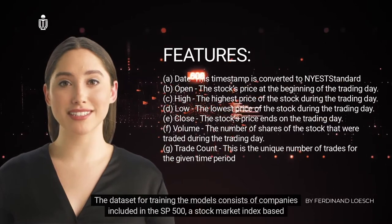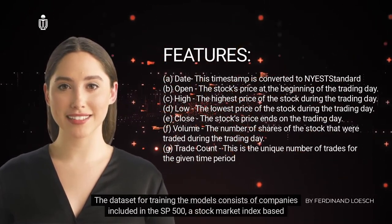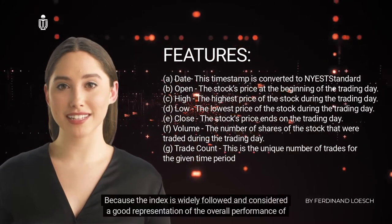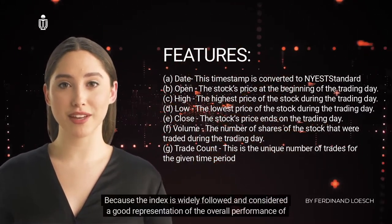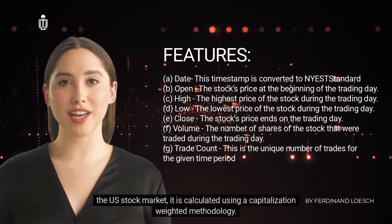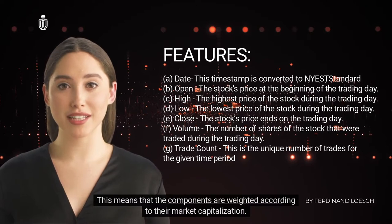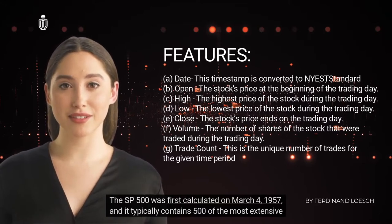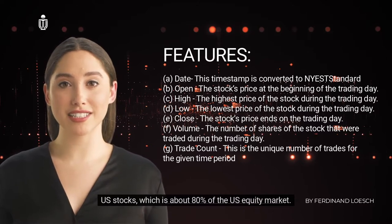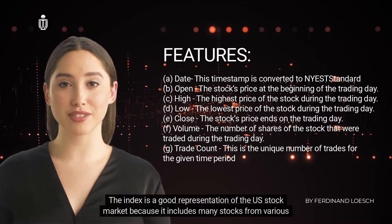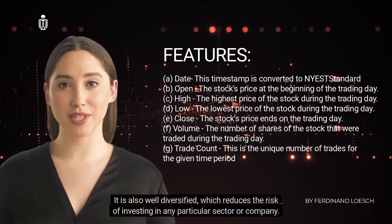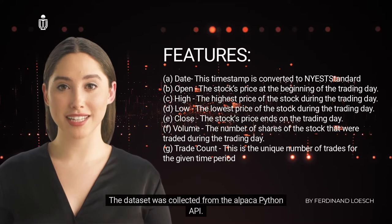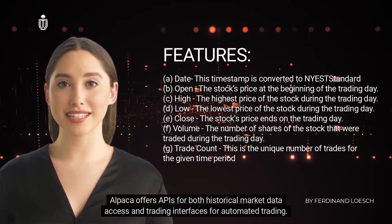The dataset for training consists of companies in the S&P 500, a stock market index based on the market capitalization of 500 large companies listed on either the NYSE or NASDAQ. It is widely followed and considered a good representation of the overall performance of the U.S. stock market, calculated using a capitalization-weighted methodology. The S&P 500 was first calculated on March 4, 1957, and typically contains 500 of the most extensive U.S. stocks, representing about 80 percent of the U.S. equity market. The dataset was collected from the Alpaca Python API, which offers APIs for both historical market data access and automated trading.